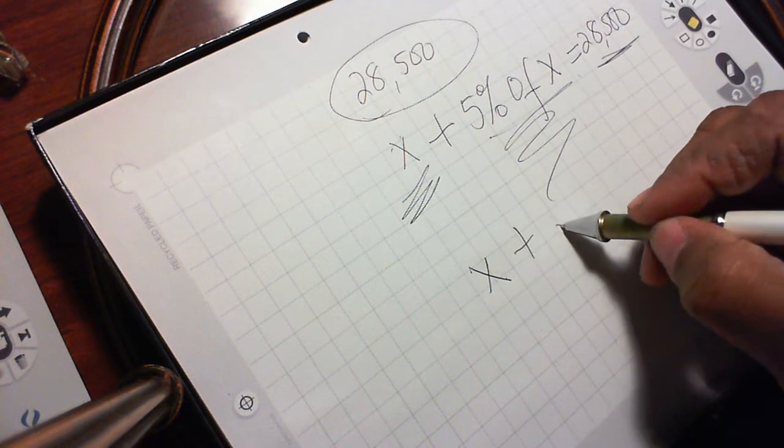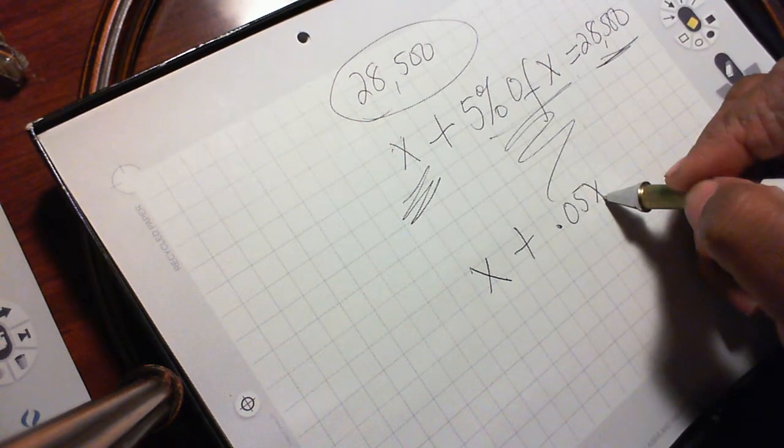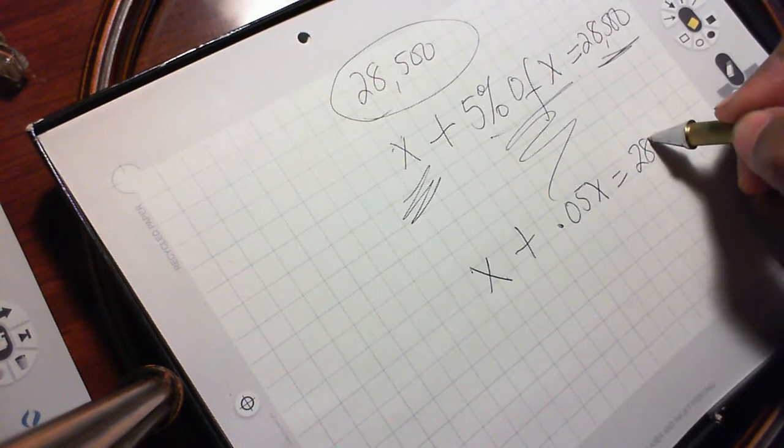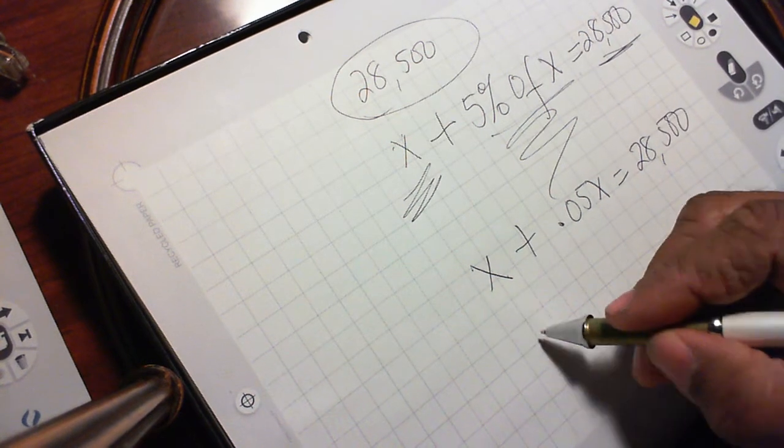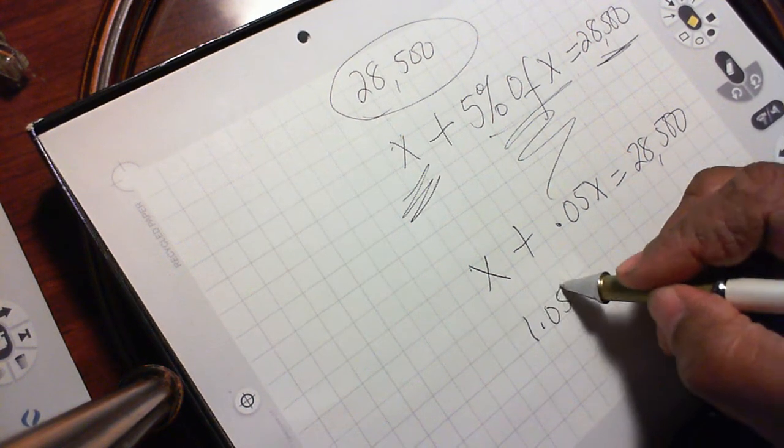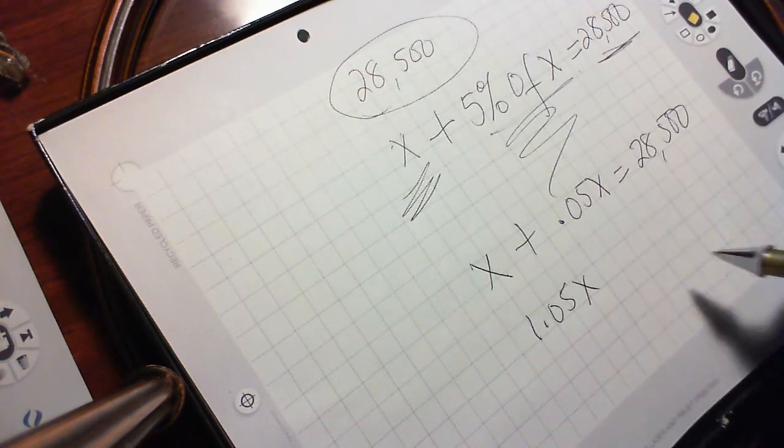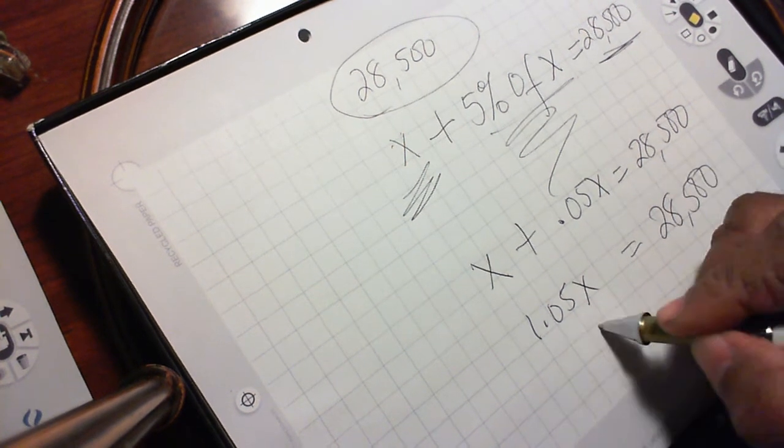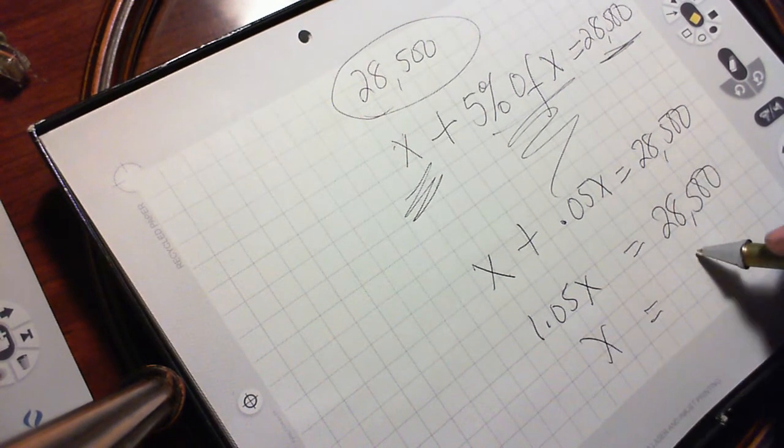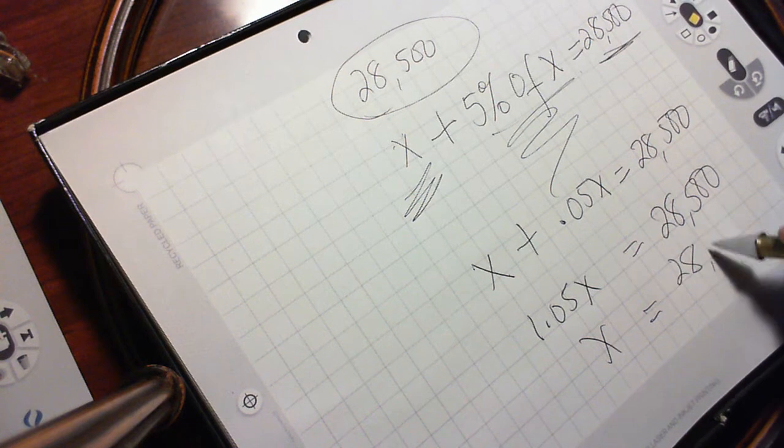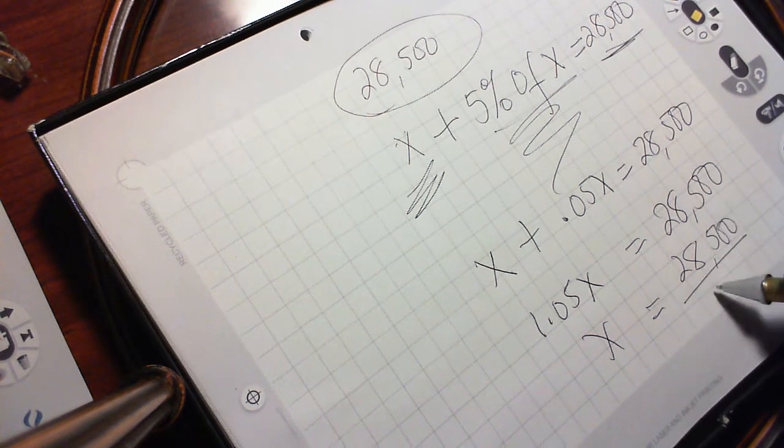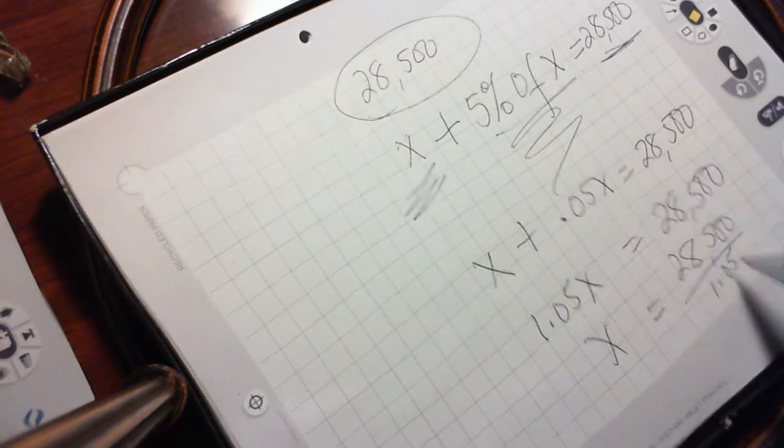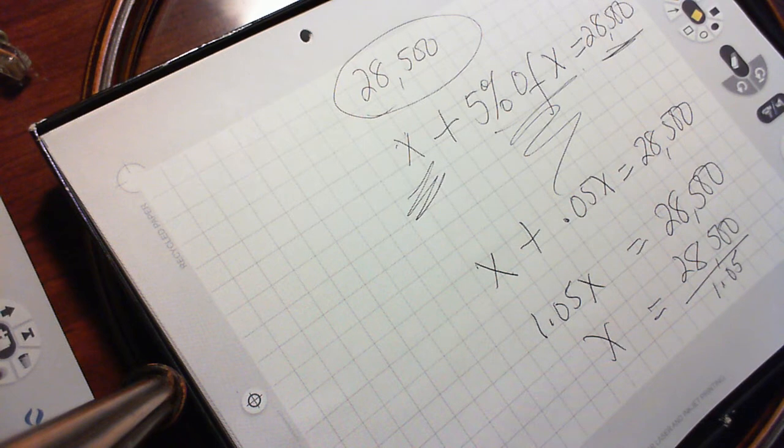All of this together is equal to the list price. So you have x plus 0.05x is equal to 28,500, and 1.05x is equal to 28,500, and you solve for x by doing 28,500 divide by 1.05. Let you do that, and that would give you the answer.